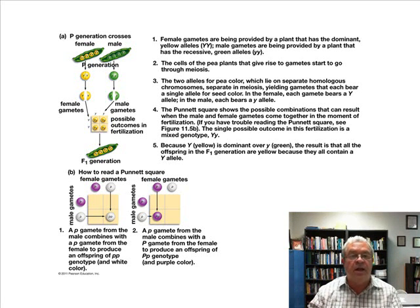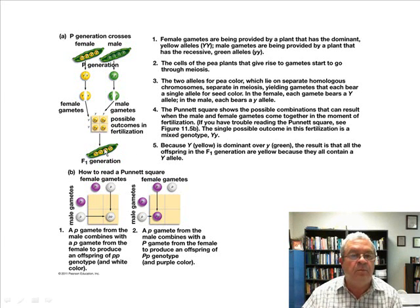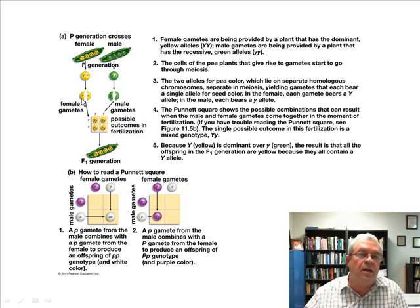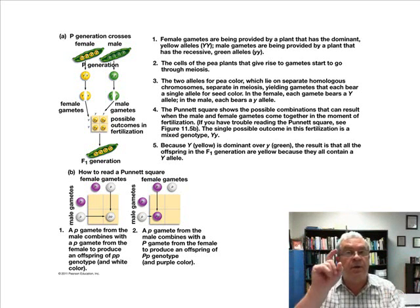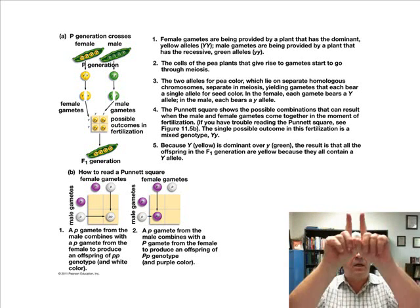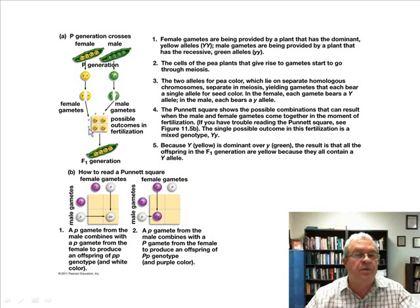Let nature take its course, and you have some new bean pods in this new generation. Then you let those mature, pop them open, and see what you got. What he got is what we said — 100% yellow seeds. And why are they yellow? The Punnett Square tells the tale. The gametes from one parent were big Y and big Y. How many copies of the gene per gamete? One. Remember, alleles are separated — each gamete gets one copy of a gene. Body cells have two; gametes have one.